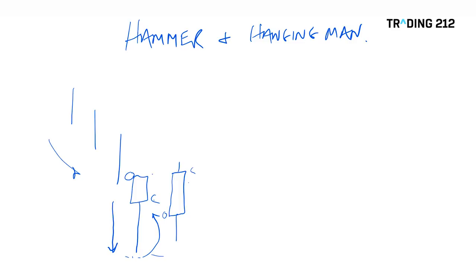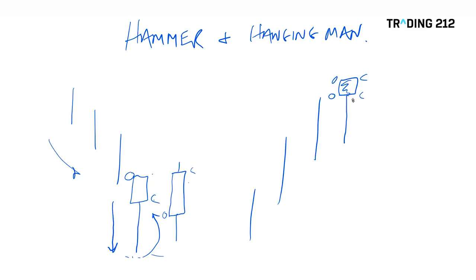Now let's take a look at the Hanging Man. We have a market that's been trending higher — in this example, daily candles, three days where the market is going higher. We have a day where the market opens, and let's assume it closes up slightly, giving us a light candlestick, or if it opened and closed lower we'd have a dark candlestick. But during the course of the day, the market pushed lower. We've seen the buyers come back in, but this test lower can suggest that the upward strength is running out of steam.